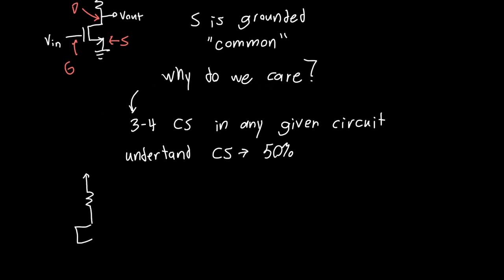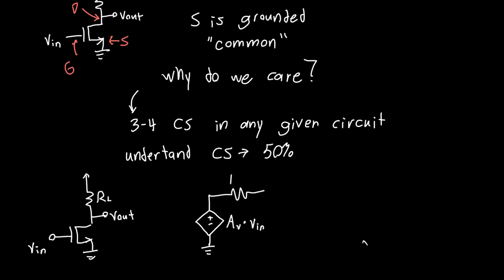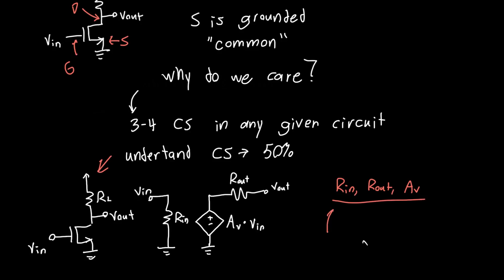How do we analyze it and what do we want to know about this amplifier? If we redraw it, we have an input voltage being applied, an output voltage, and a resistance RL — the standard notation for load resistance. Every amplifier can be characterized or reduced to a Thevenin equivalent with some voltage gain Av, some output resistance R_out, and some input resistance R_in. If we can characterize these three things — R_in, R_out, and Av — then we have fully characterized this amplifier, and these three parameters completely tell us how our circuit interacts with the world.